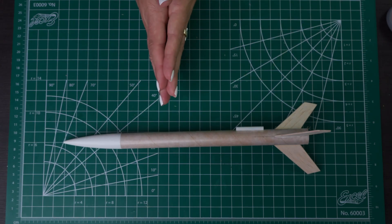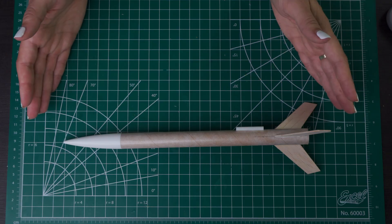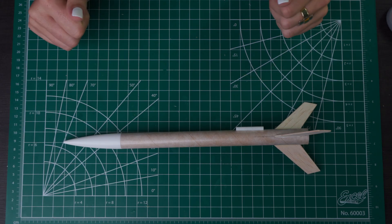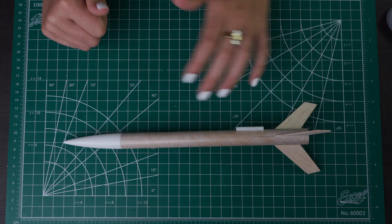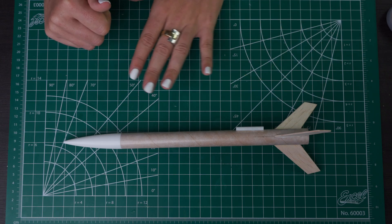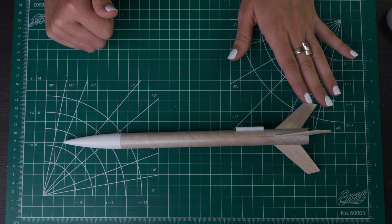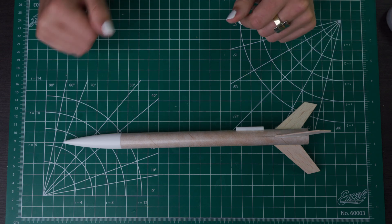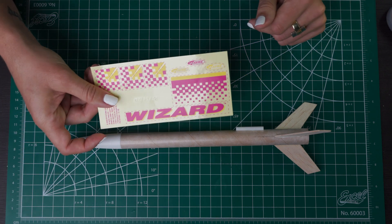Now your rocket is built so this is a great time to do some painting and finishing if you'd like. If not you can launch it just like this. But if you are going to paint it do some primer first and then sand it between coats to get a nice smooth finish. Then paint whatever color you'd like and finish it with your decals.